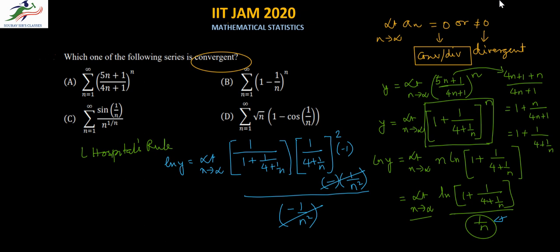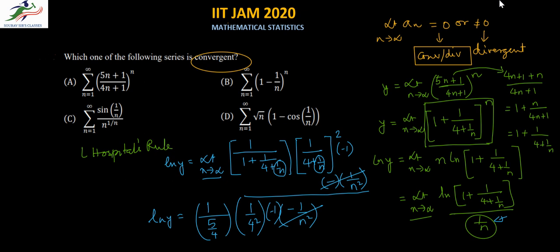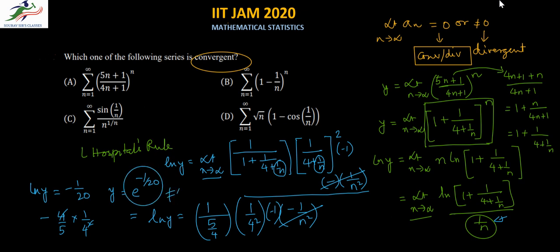Plugging in n → ∞: ln y equals 1/(1 + 1/4) · 1/(4)² · (−1), since 1/n → 0. So 1 + 1/4 = 5/4, giving (4/5) · (1/16) · (−1) = −1/20. This is a finite non-zero value.